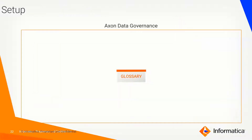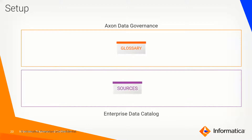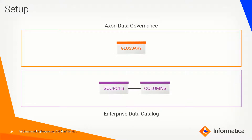The journey starts in Axon. In Axon, you define your business glossary. And once you define your business glossary, you are going to look at how things are on the Enterprise Data Catalog side. Enterprise Data Catalog is my window for my technical metadata. I will be having multiple sources — this could be an Oracle database, something in cloud, or something unstructured.